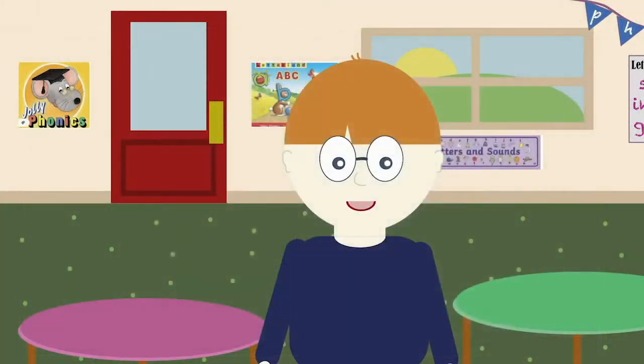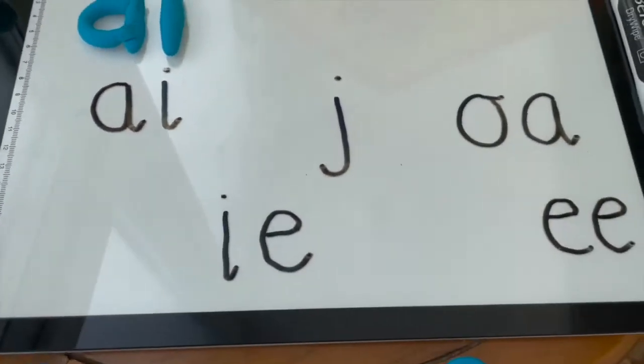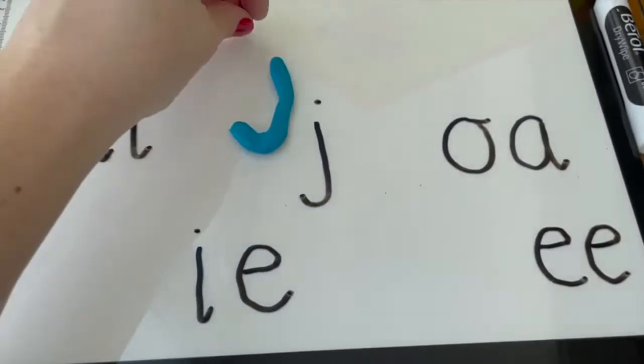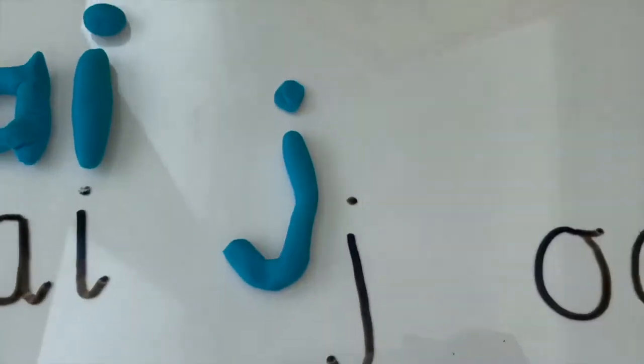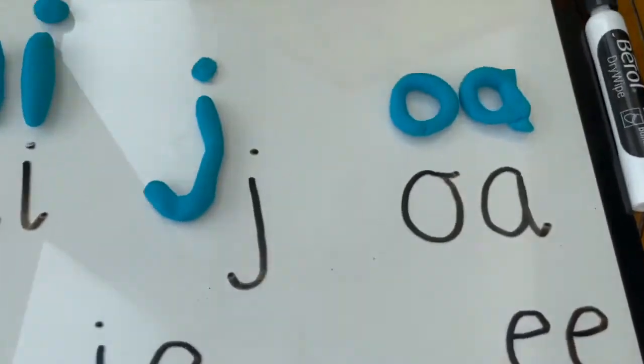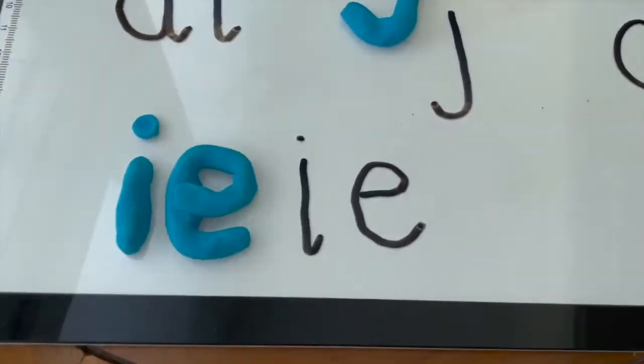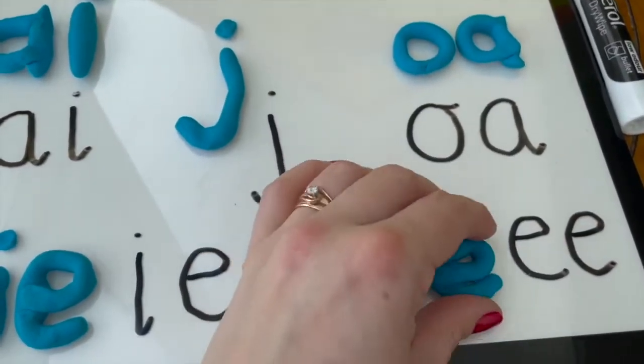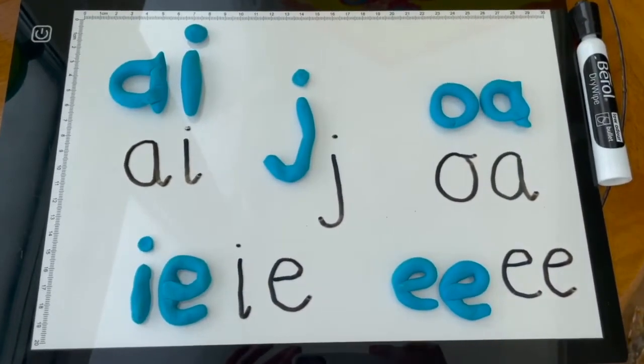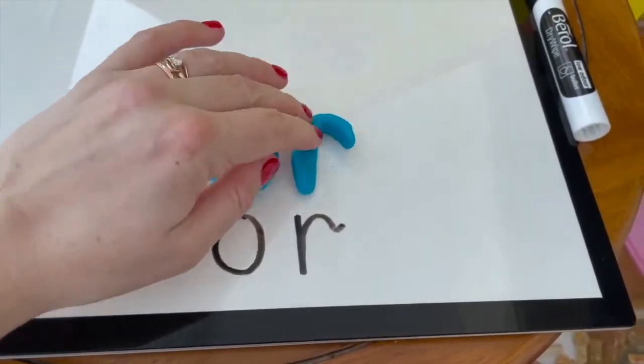Now let's have a look at group four. A and I make the AI sound. J has a dot at the top and a tail. O and A make the OA sound. I and E make the IE sound. E and E make the EE sound. O and R make the OR sound.